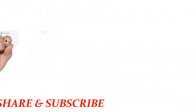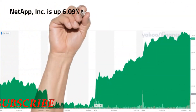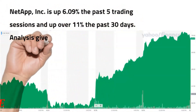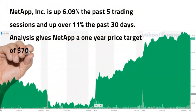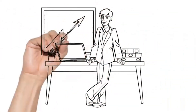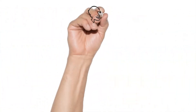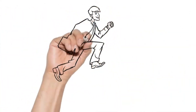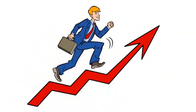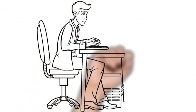Conclusion: NetApp, Inc. is up 6.09% the past 5 trading sessions and up over 11% the past 30 days. Analysts give NetApp a one-year price target of $70.50 per share. NetApp is in a strong uptrend that is likely to continue. While NTAP is showing intraday weakness, it still remains in the confines of a bullish trend. Traders should protect profits and utilize stop orders. Look for a change in score to suggest a slowdown in momentum or a trend reversal.